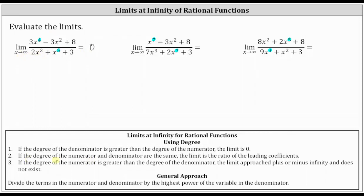Second, if the degree of the numerator and denominator are the same, the limit is the ratio of the leading coefficients. For the second example, the degree of the numerator and denominator are both seven. The coefficient of x to the seventh is one, and therefore the limit is equal to one divided by two, or one half.